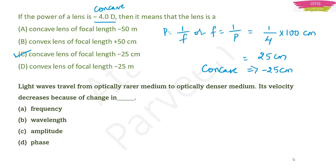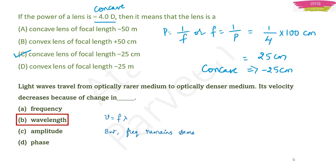Question: Light waves travel from optically rarer medium to optically denser medium. Its velocity decreases because of a change in — wavelength. Remember V = Fλ; velocity is proportional to wavelength. Frequency remains the same when light travels between media of different optical density, so velocity decreases because of the change in wavelength — option B.